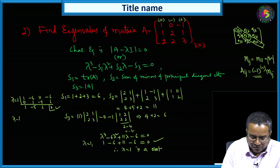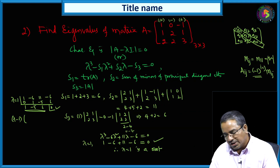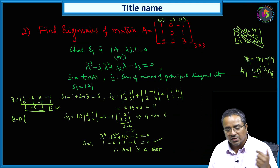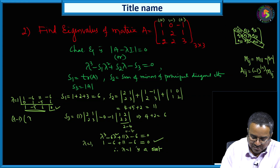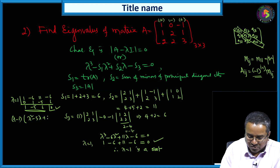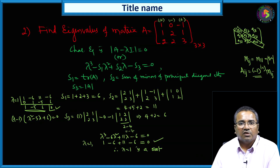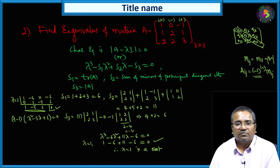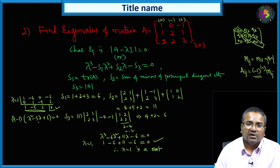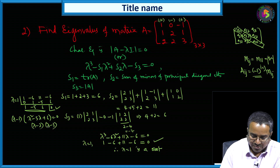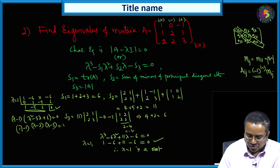Therefore, (λ - 1) is a factor. The remaining second-degree equation is λ² - 5λ + 6 = 0. Choosing two numbers whose sum is -5 and product is 6: the factors are (λ - 2)(λ - 3). So λ - 1 = 0, λ - 2 = 0, λ - 3 = 0. Therefore, the eigenvalues are λ = 1, 2, 3.